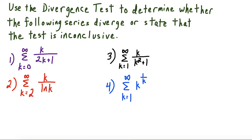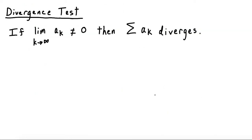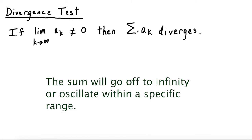What's up everyone, I'm Vincent and today I want to show you how to use the divergence test. We're going to use this test to go through these four questions here. Here is the divergence test: we take the limit as k goes to infinity of the term a sub k, and if it's a non-zero limit, that means the series of a sub k diverges. The concept is that if you add up a bunch of non-zero terms infinitely often, that's just going to go off to infinity.